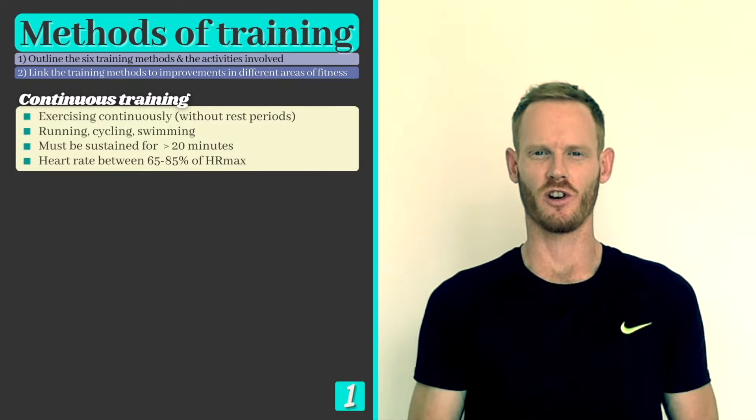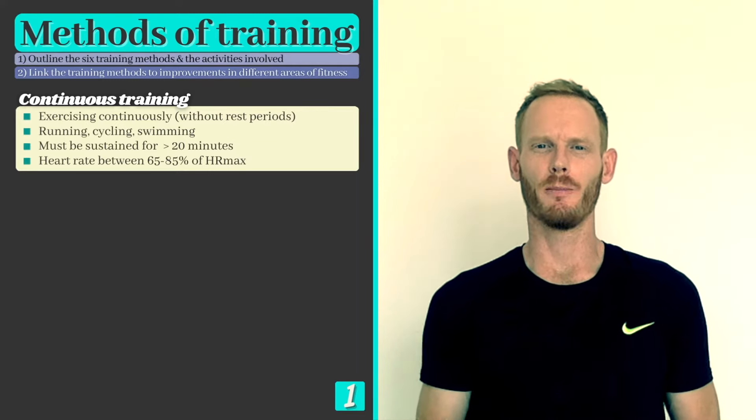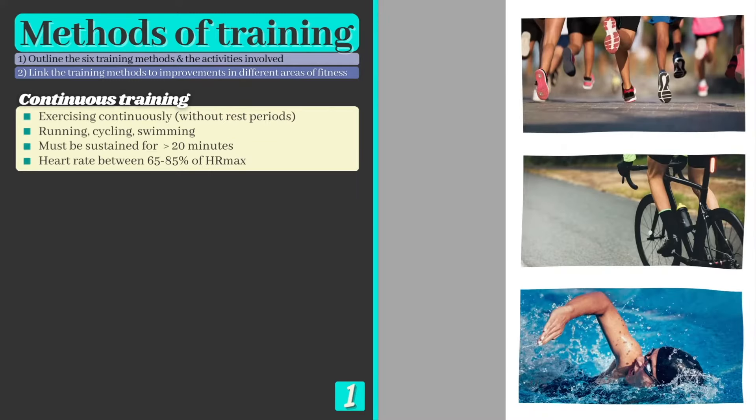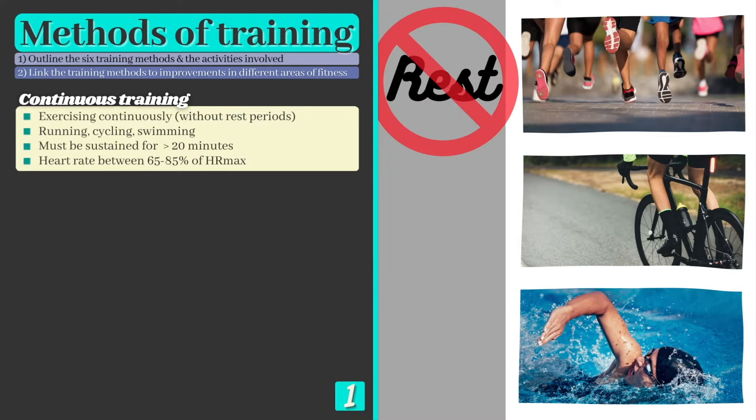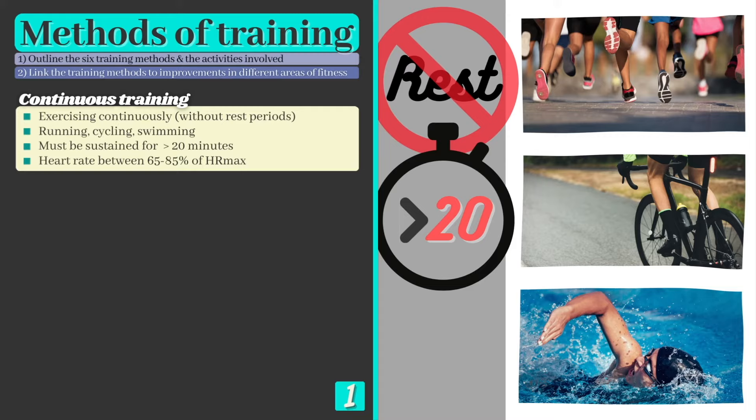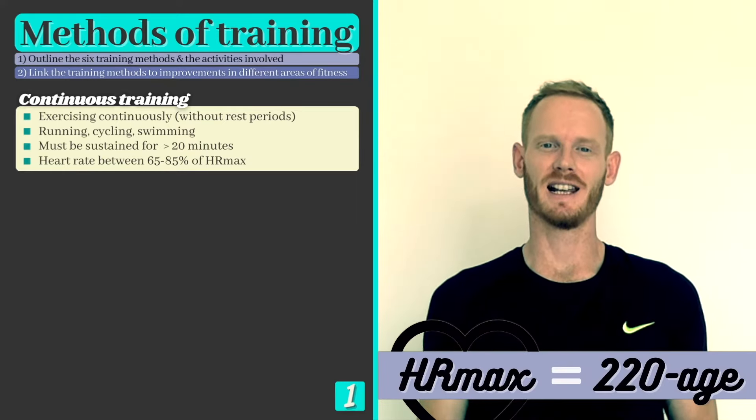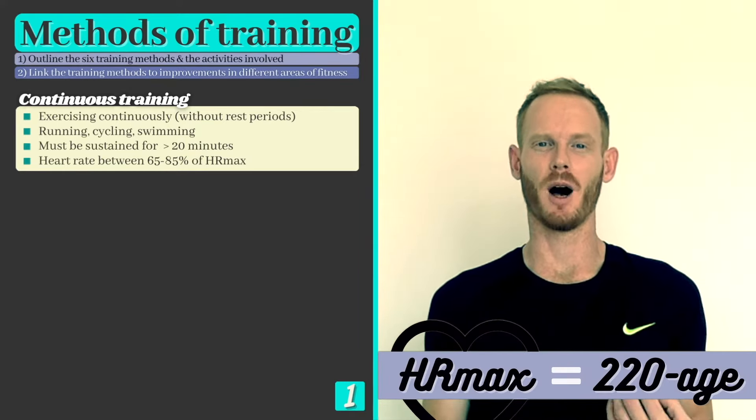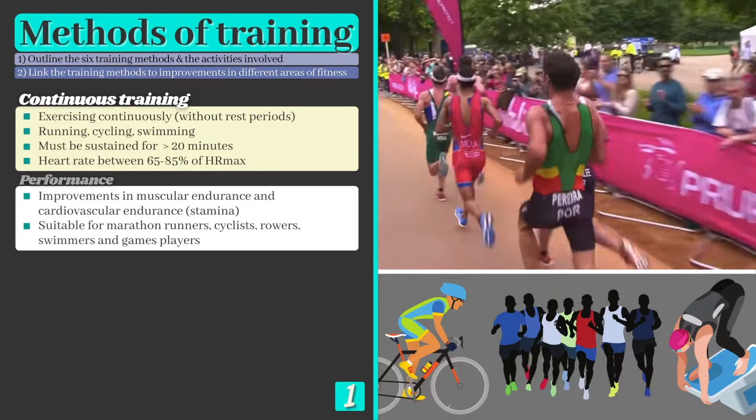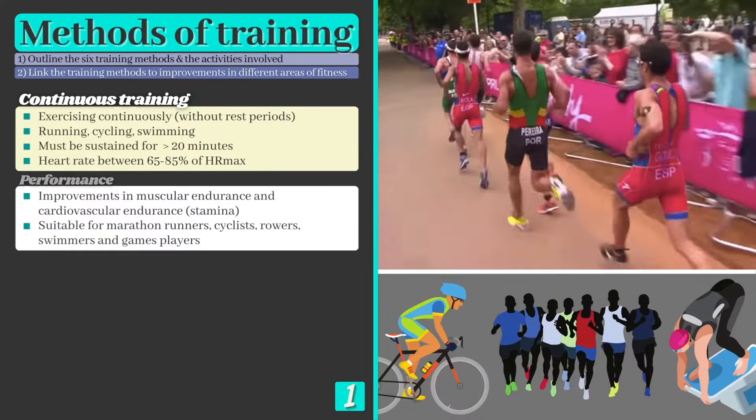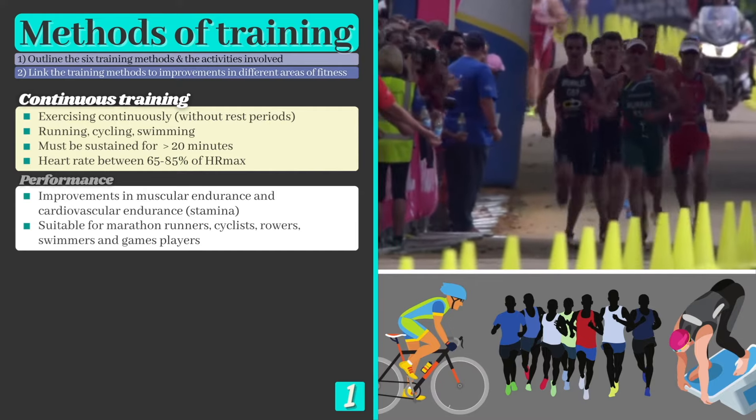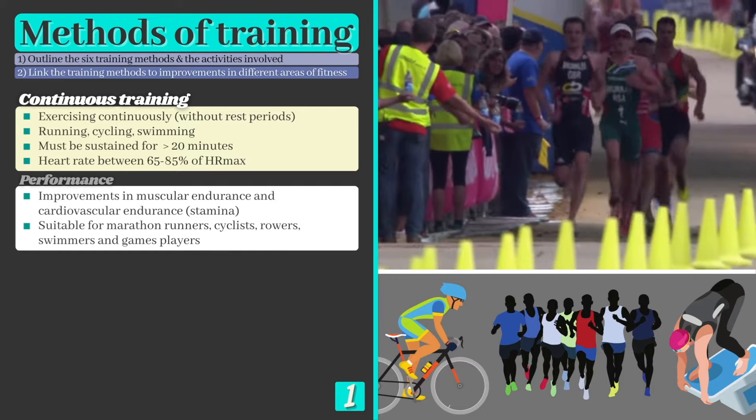Training method 1: continuous training. Continuous training is performing large compound movements such as running, cycling, or swimming continuously or without rest periods. Continuous exercise needs to be sustained for a minimum of 20 minutes if it's to be effective, and intensity is set according to heart rate, which should be kept between 65 and 85% of your maximum. Remember, heart rate can be calculated by using the equation 220 minus your age. Continuous training improves both stamina and muscular endurance and is therefore used by aerobic athletes including marathon runners, cyclists, swimmers, and games players.